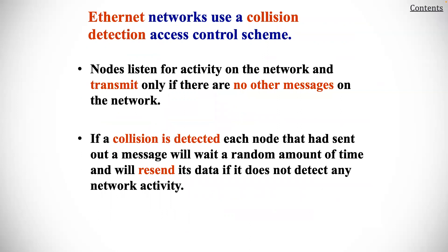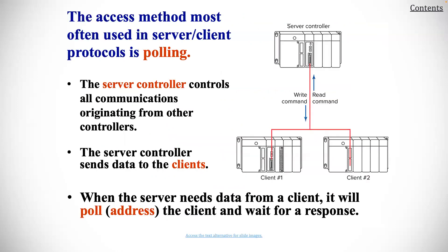Ethernet networks use a collision detection access control scheme. Nodes listen for activity on the network and transmit only if there are no other messages on the network. If a collision is detected, each node that has sent out a message will wait a random amount of time and will resend its data if it does not detect any network activity.